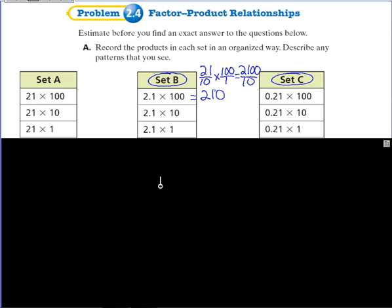Now, let's look at set C. 21 hundredths times 100 over 1. 21 times 100, 2,100. 100 times 1, 100. And if we simplify by 100 on both the numerator and the denominator, you'll find out that your answer is 21.